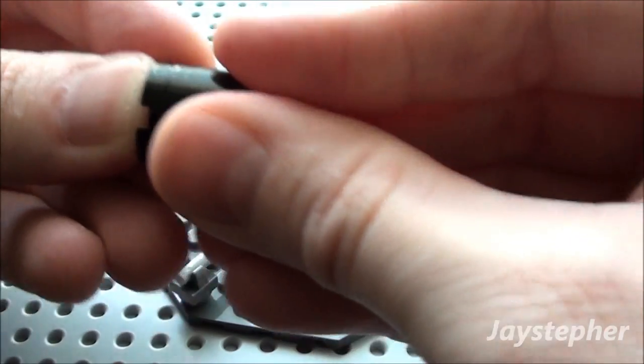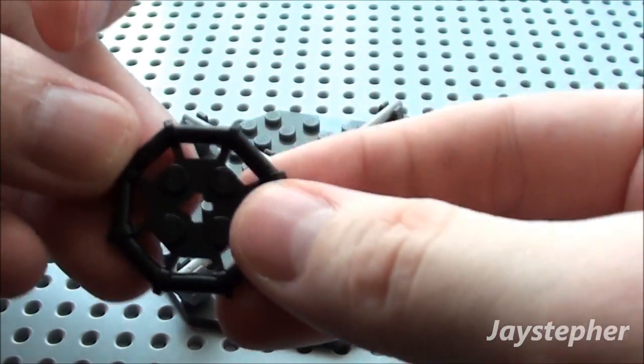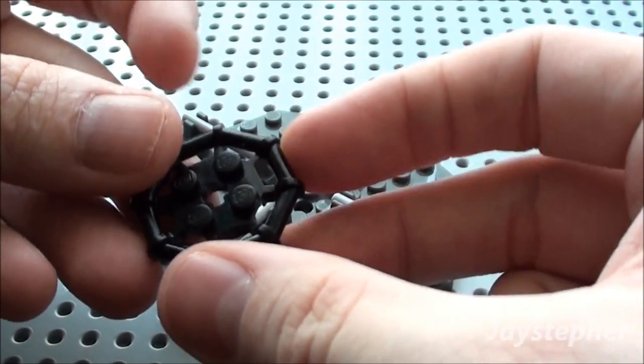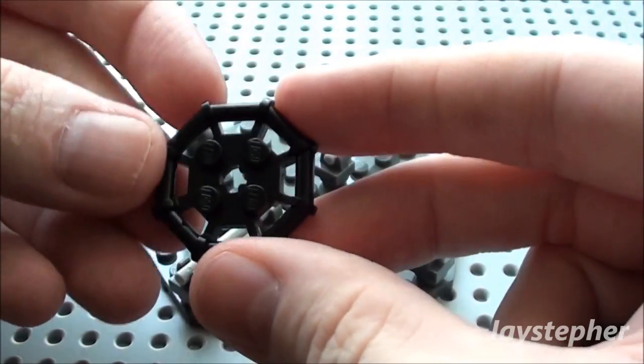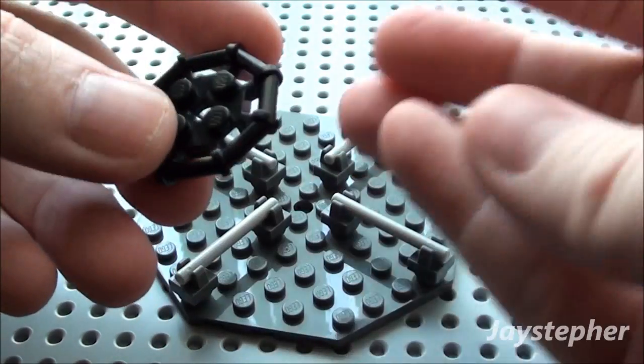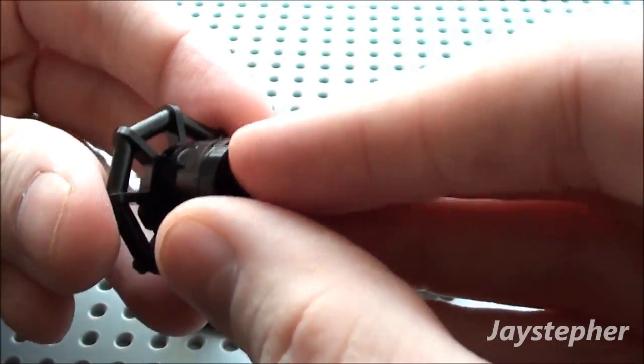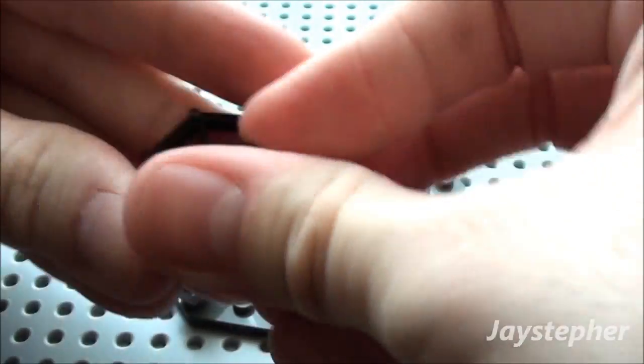We're going to place this at the bottom here, and take one of these 2 by 2 plates. It looks more like a steering wheel for a boat or something, but it would make a good handlebar. Just kind of place this at the bottom, like so.